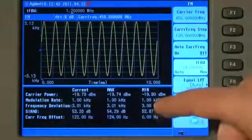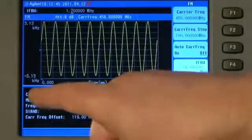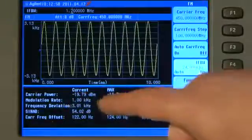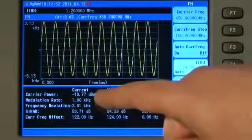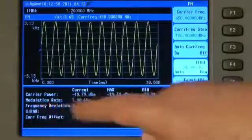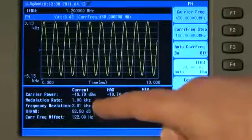in the table at the bottom of the screen, you can see it is telling us the carrier power, the current value in dBm, the modulation rate, 1.00 kHz. That is the frequency of our test tone. And you can see the FM deviation, 3.01 kHz.